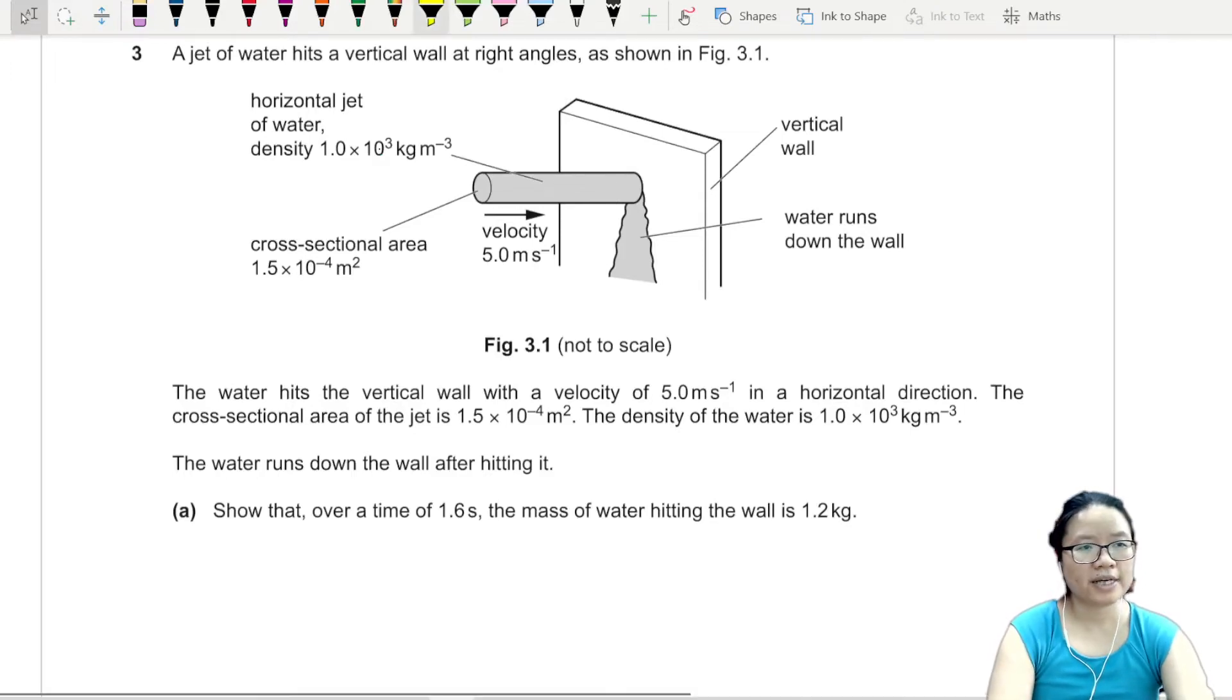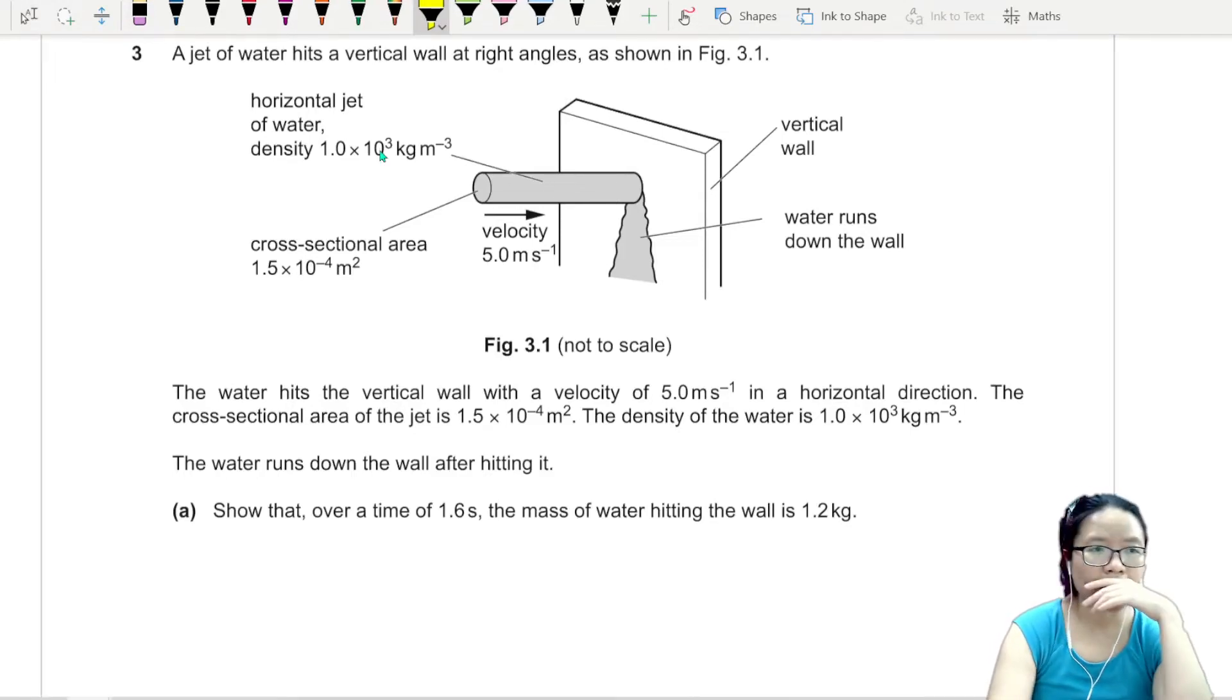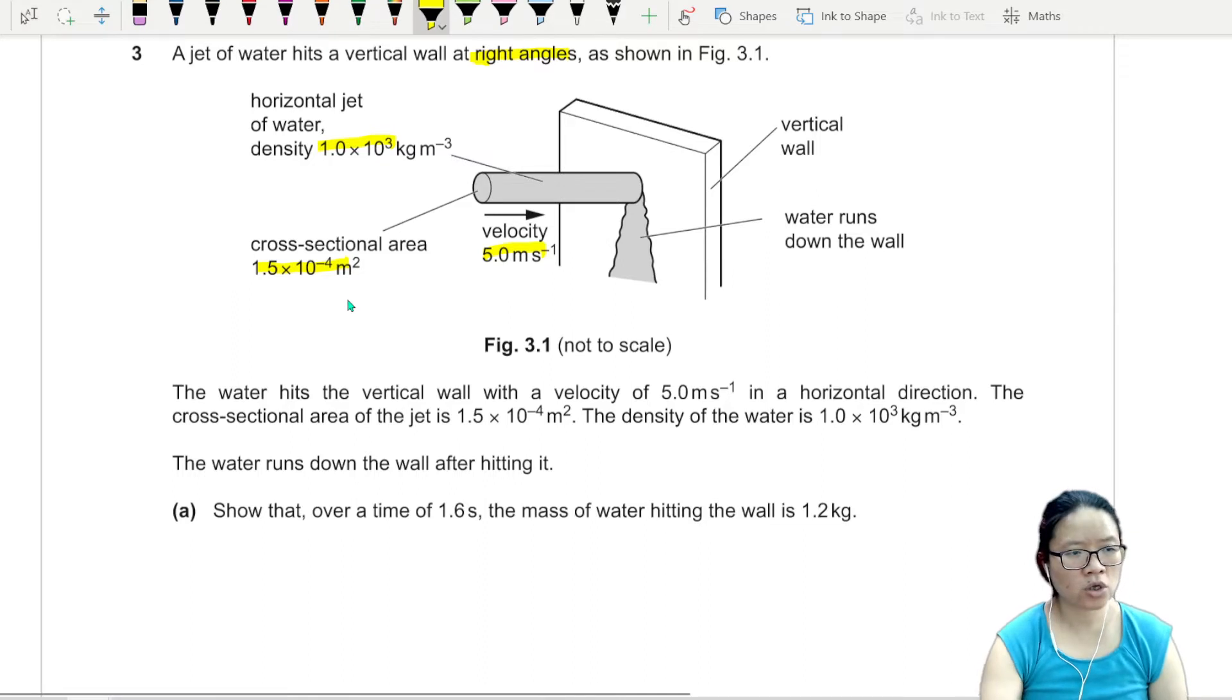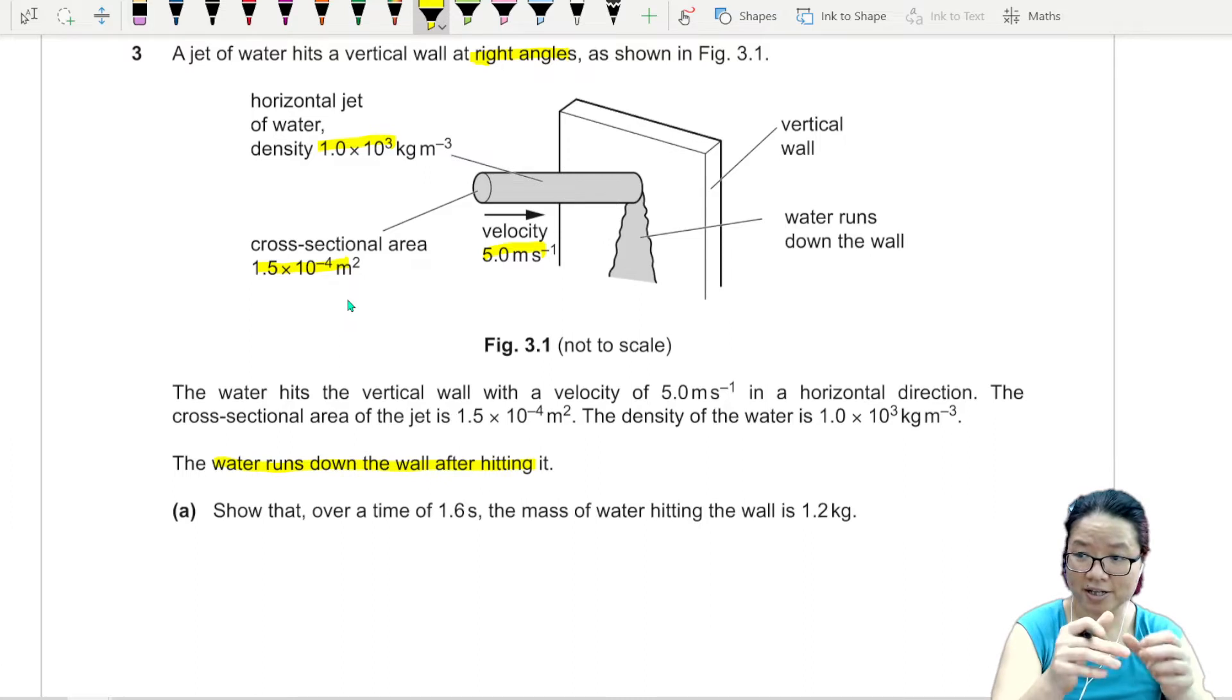Number three, a jet of water hits a vertical wall at right angles as shown in figure 3.1. So you have the water shooting at the vertical wall. Given a lot of information like density, area, velocity. Water hits the vertical wall with a velocity of 5 meter per second, cross-sectional area and density is given. The water runs down the wall after hitting it. So it doesn't reflect or splash backwards. Show that over a time 1.6 seconds, the mass of the water hitting the wall is 1.2 kg.